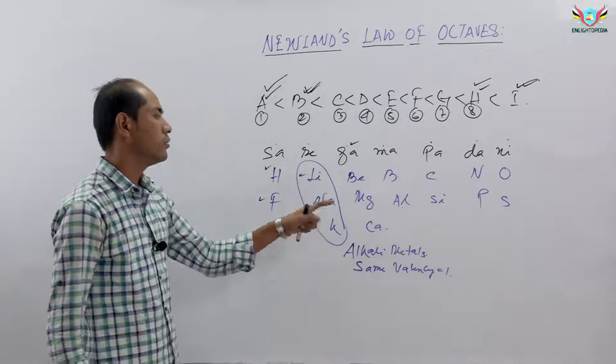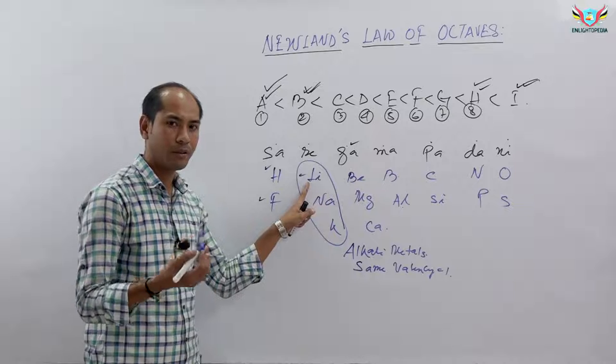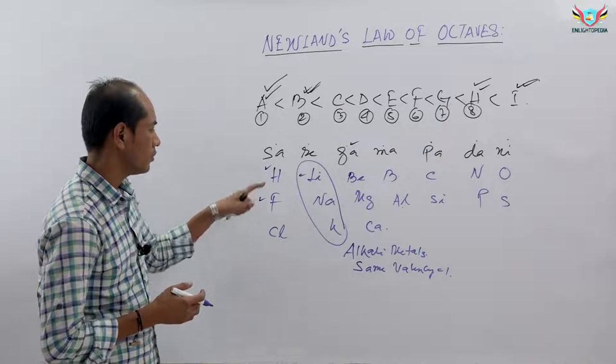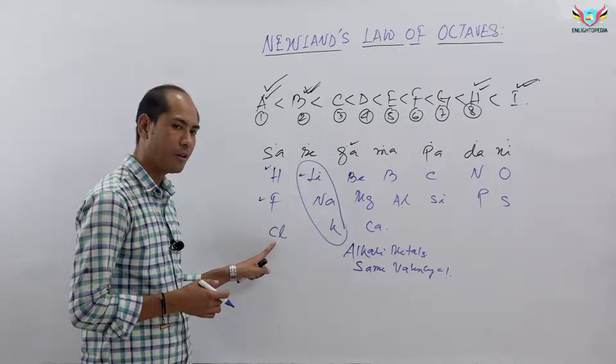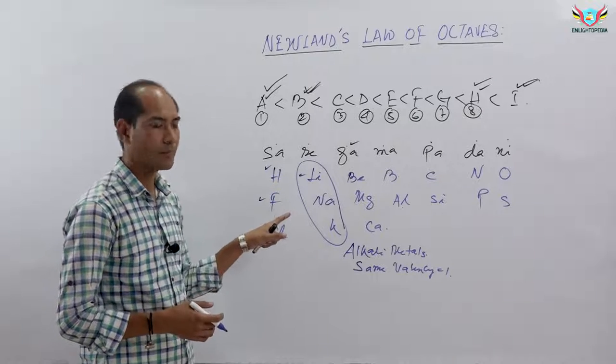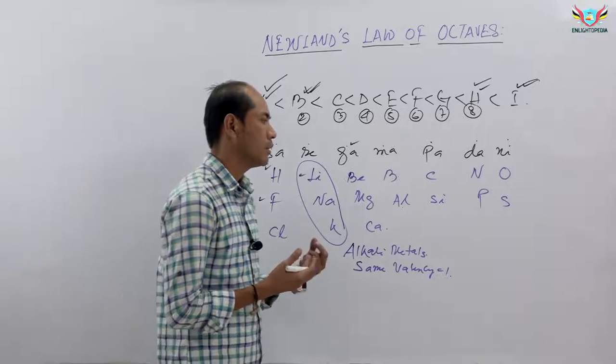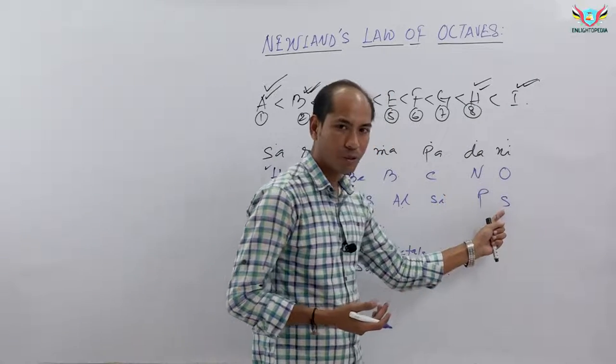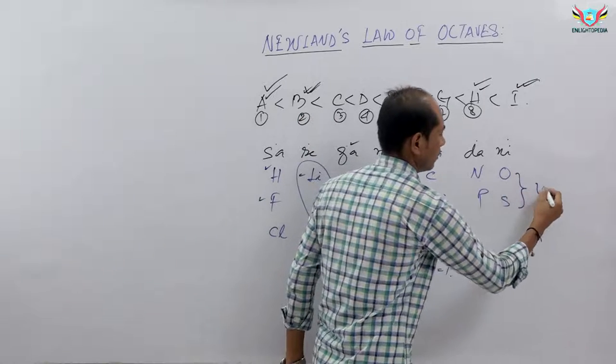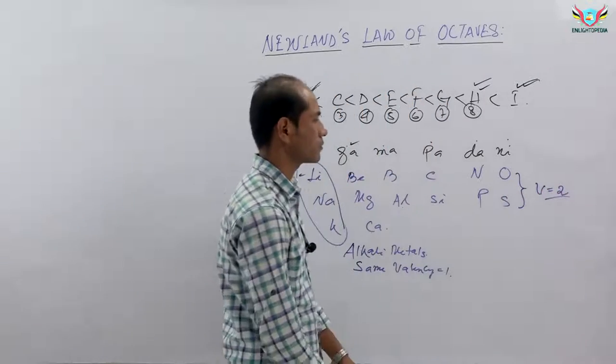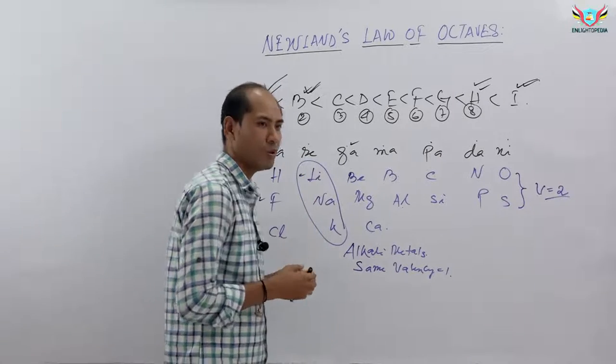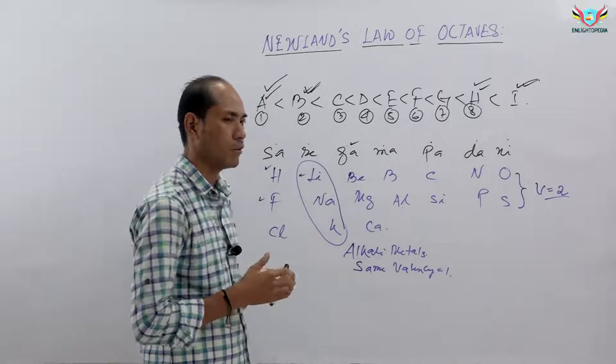We can see that any element and the eighth element from it have similar properties. For example, hydrogen, fluorine, and chlorine - these elements all have valency of one, though they are non-metals. They have similar properties. Similarly, oxygen and sulfur - oxygen has valency of two, sulfur has valency of two. This is how the law works, but in this case there are limitations.